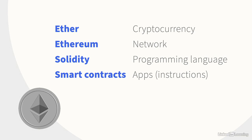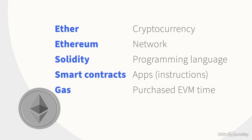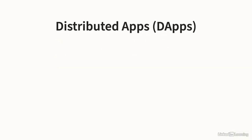Smart contracts can't just be deployed and run for free indefinitely. You can probably guess that it's the cryptocurrency Ether that is used to pay for any work on the network. Ether buys gas — that is the equivalent of a service charge for computational effort on the EVM.